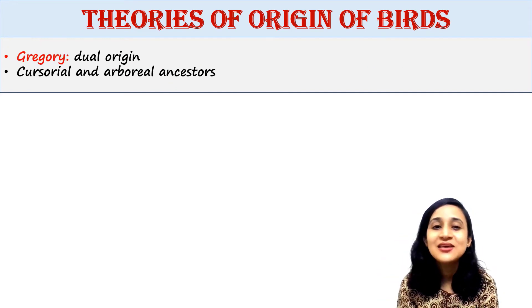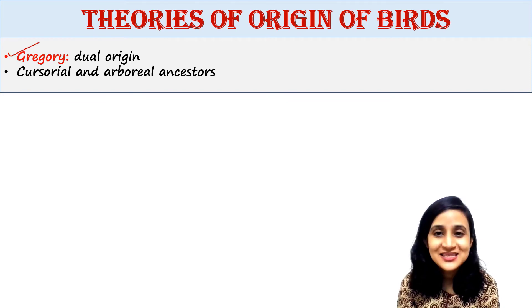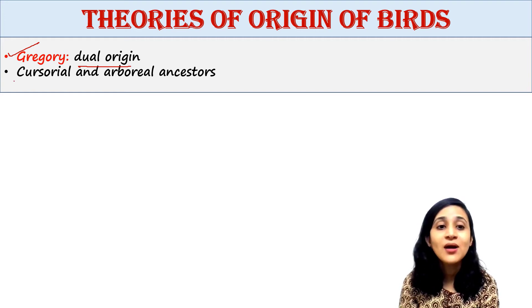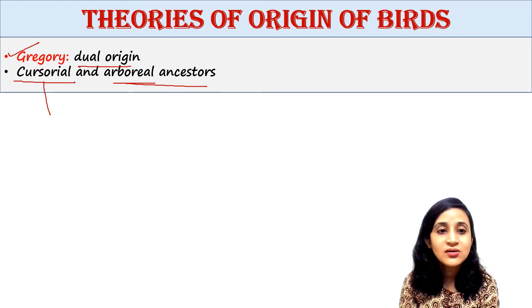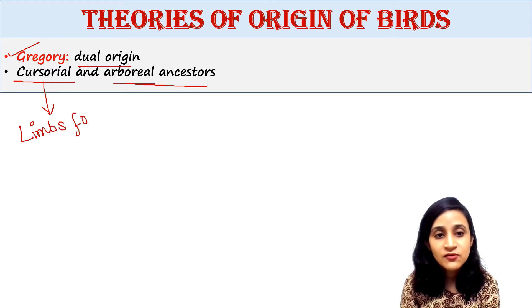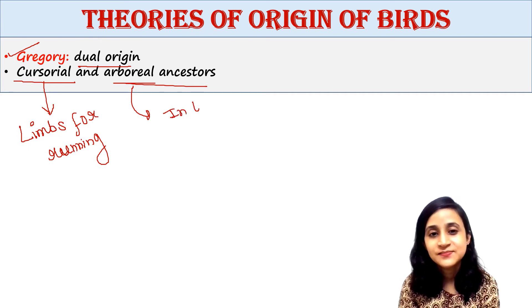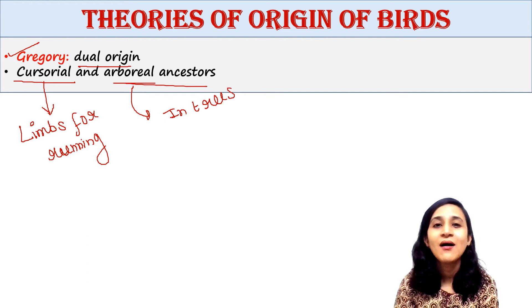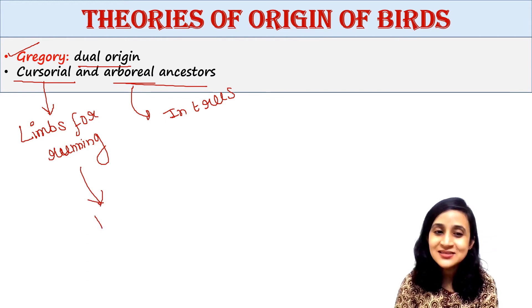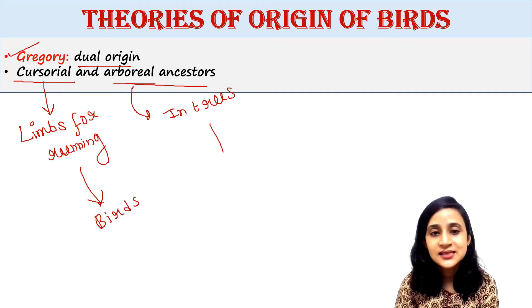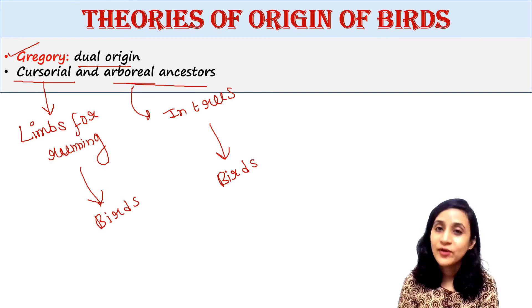The next theory was given by Gregory. He suggested that birds have a dual origin — some have evolved from cursorial ancestors and others from arboreal ancestors. Cursorial means creatures who used their limbs for running, and arboreal means those who lived in trees. So some birds came from cursorial ancestors and some from arboreal ancestors.